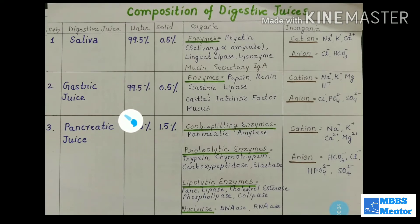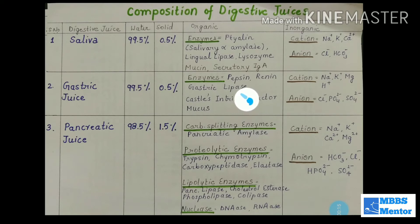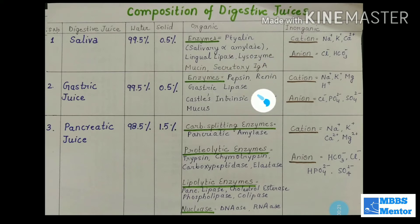Coming to gastric juice, it has 99.5% water and 0.5% solids. The enzymes are proteolytic, meaning they act on proteins. Pepsin is secreted in an inactive form as pepsinogen. There is also rennin — note that rennin is spelled R-E-N-N-I-N, which is different from renin.